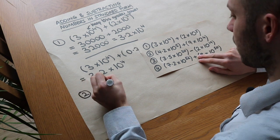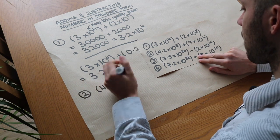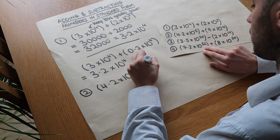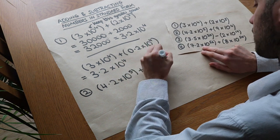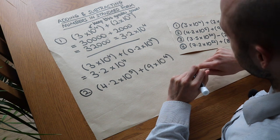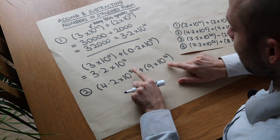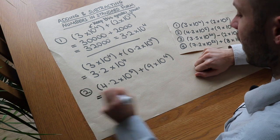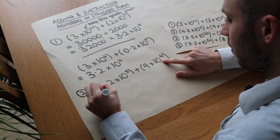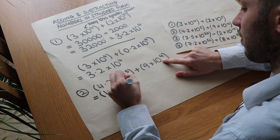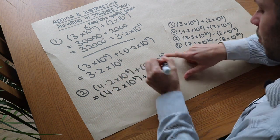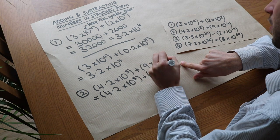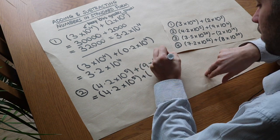So we've got 4.2 times 10 to the 5 plus 9 times 10 to the 4. We search for the higher power. So this one has the higher power, so this is the one that we want to change. It's going to be 4.2 times 10 to the 5. That stays as it is because it's the higher power. Plus, well that needs to become 10 to the 5 so it matches this, the higher power.